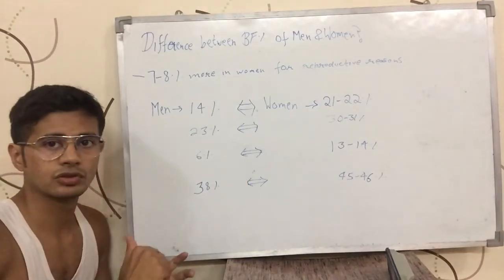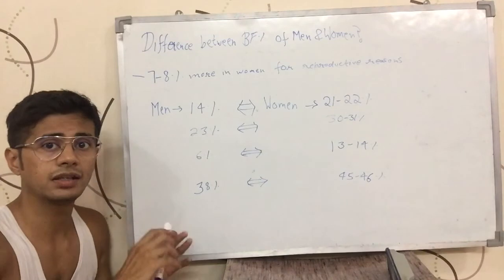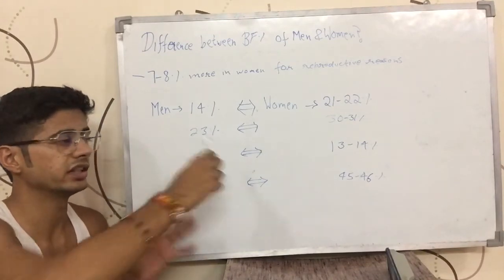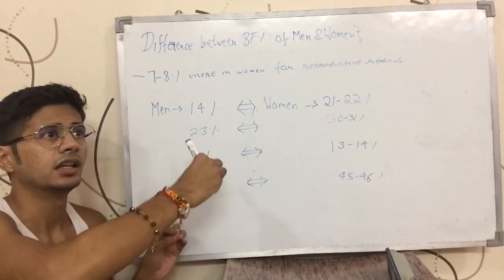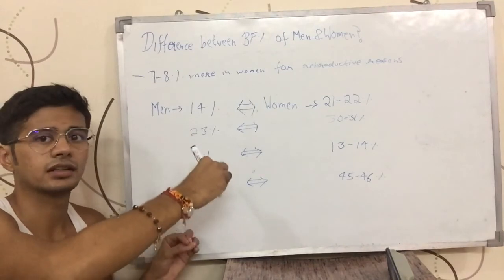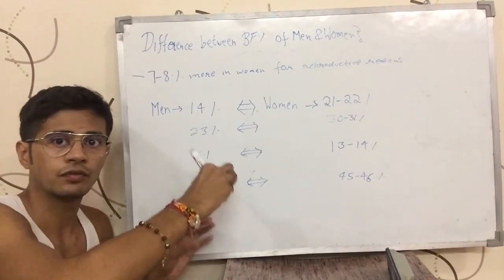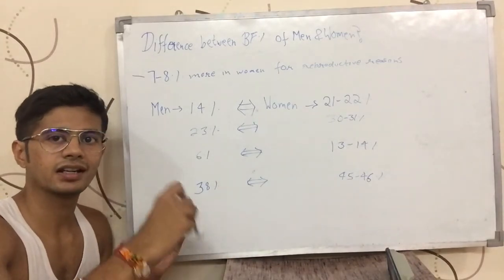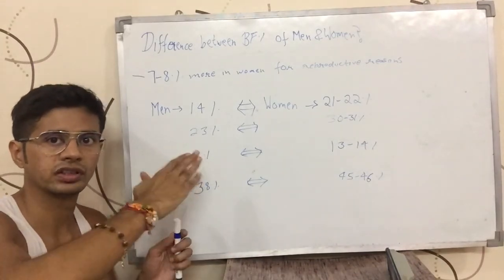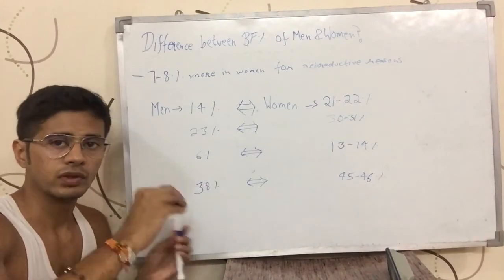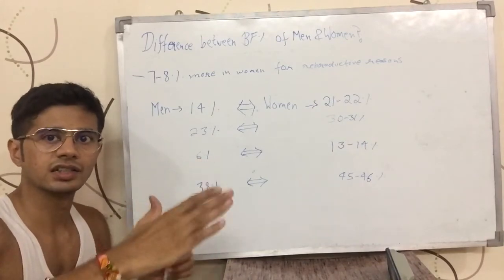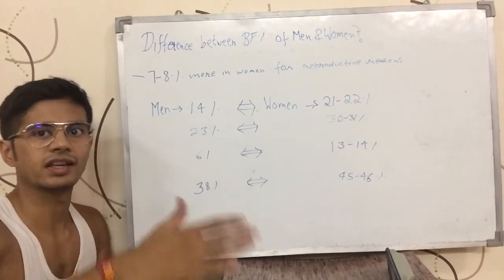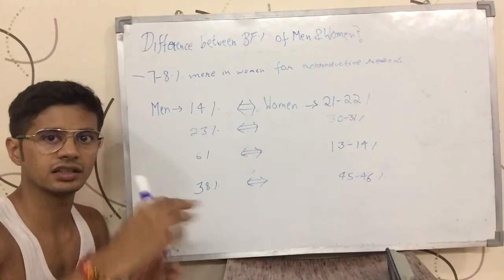So if in any of my videos I tell, okay 13 percent body fat is a decent body fat to be at for a man and I forgot to tell about a woman, then the woman can add 7 to 8 percent. So 13 plus 7 is 20. 20 to 21 percent is a decent fat percentage for a woman to be at. So the woman can understand this way.